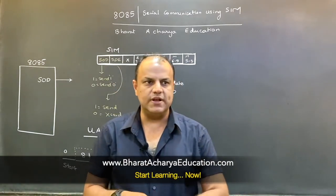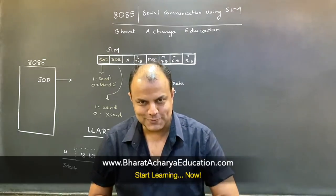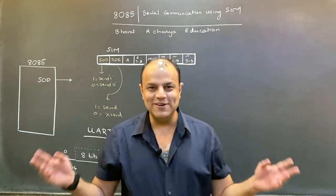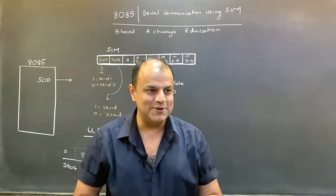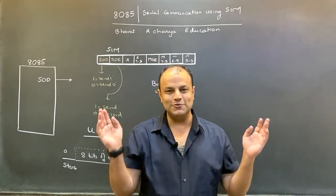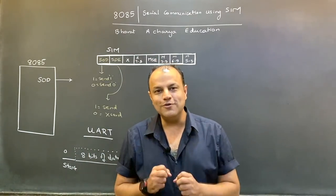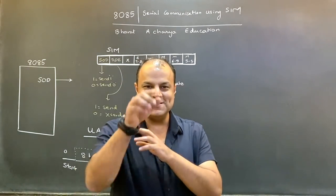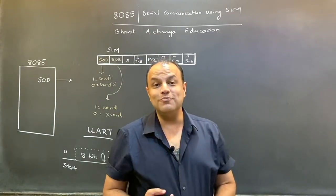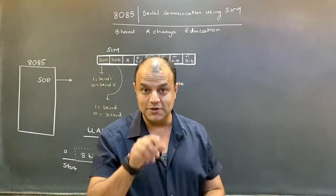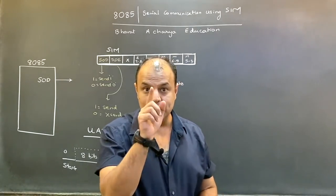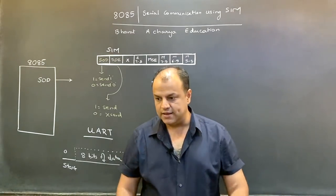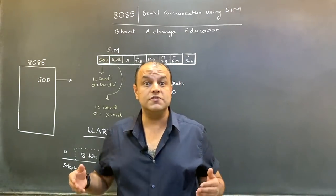Is serial communication used in the world? Maximum communication in the world — long distance communication, internet communication, telephone communication and so on — all of that is serial communication because serial communication uses only one line. So obviously the cost is much lower. To send one bit at a time you need only one line; to send 8 bits at a time you need 8 lines, which increases the cost 8 times.